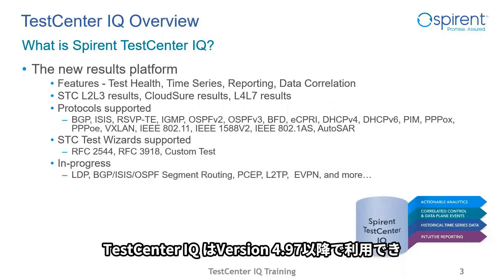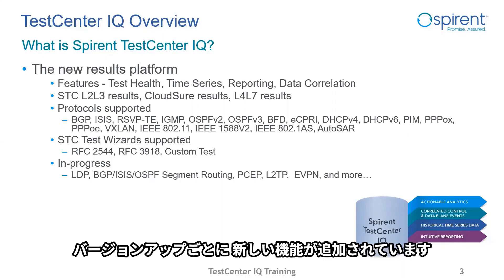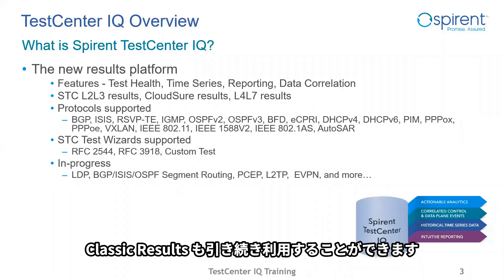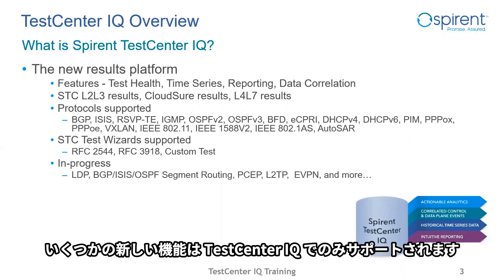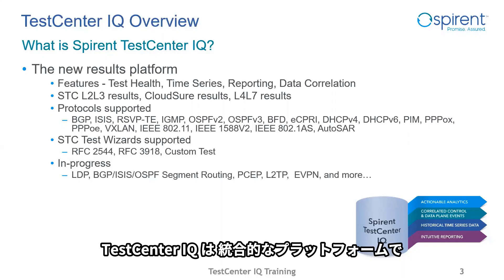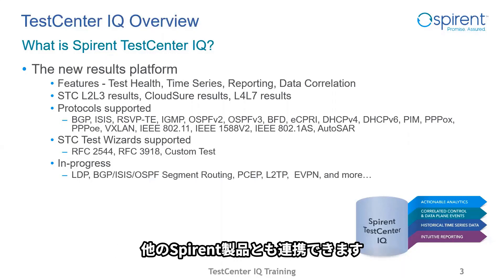Test Center IQ was released with STC 4.97 and it is in continued development with monthly releases. Classic results will continue to exist until the full migration is complete. Currently there's no date set for the removal of classic results from STC. However, many new protocols are already supported on Test Center IQ and many more are in progress. Test Center IQ is the platform for results not only from STC, but also from other new applications such as CloudShare.